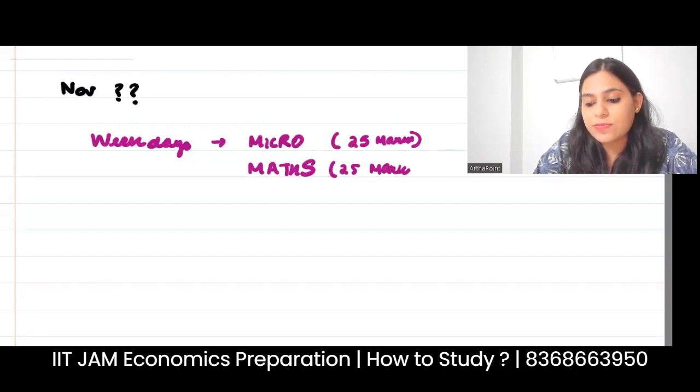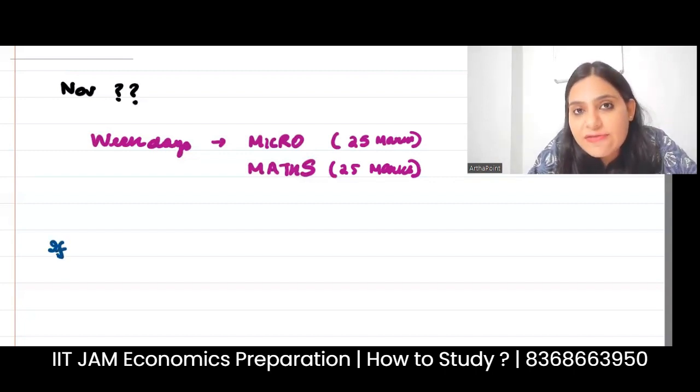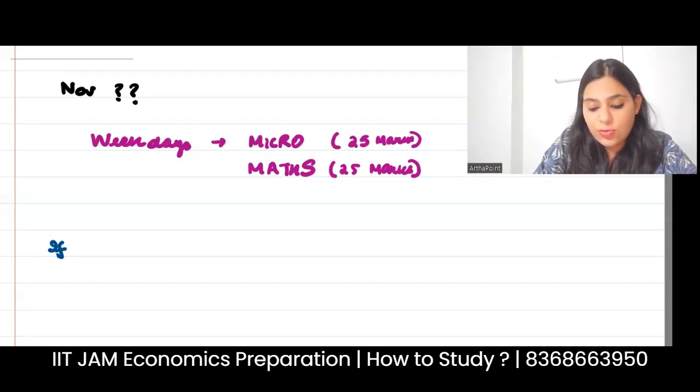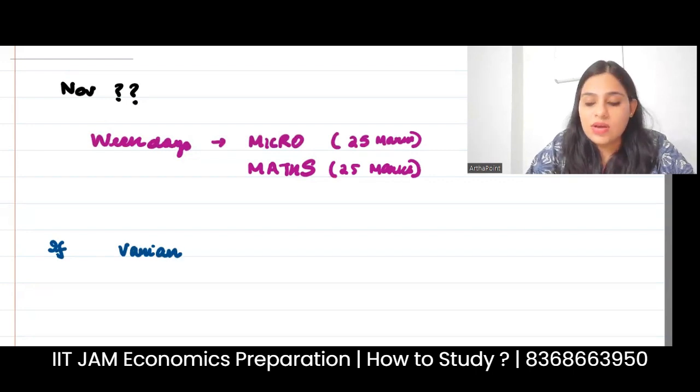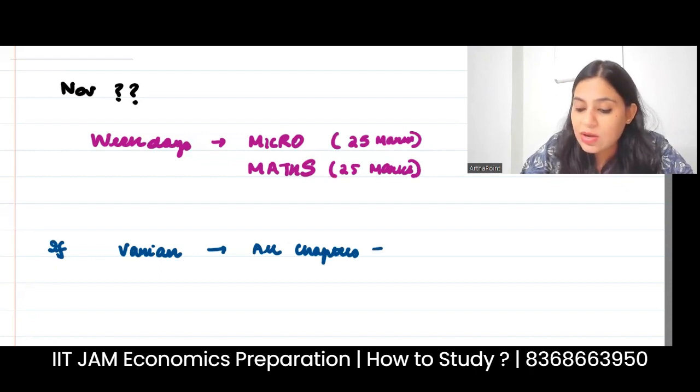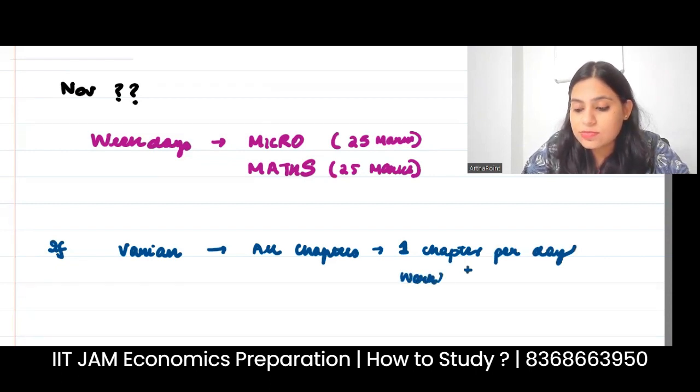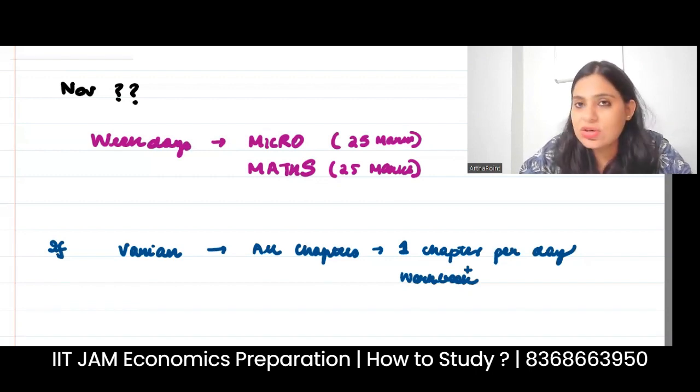Micro means 25 marks and maths means 25 marks. At this time, if you have never seen micro before, if you've never opened it, if conceptual clarity is not there, I would suggest you to do Varian, all chapters. We know which chapters to skip. Apart from those, all remaining chapters - approximately 30-31 chapters have to be done. One chapter per day, followed by same day, you have to do the Varian workbook. Same day. Don't keep it for the next day.